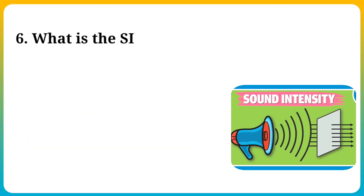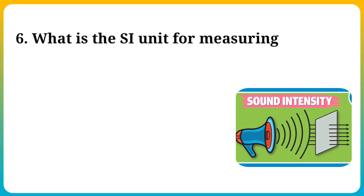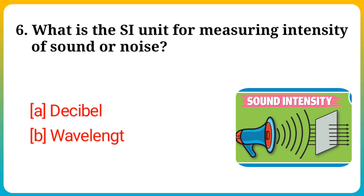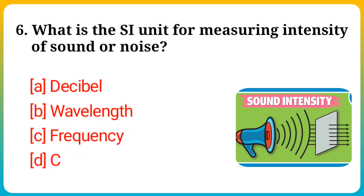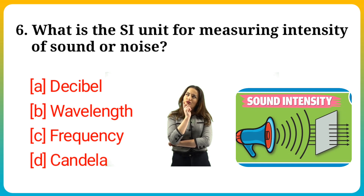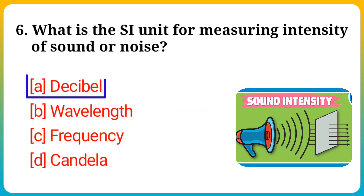Question number 6. What is the SI unit for measuring intensity of sound or noise? Option A: Decibel, B: Wavelength, C: Frequency, D: Candela. Answer is option A: Decibel.